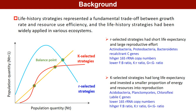As we know, life history strategy represents a fundamental trade-off between growth rate and resource use efficiency, and has been widely applied across various ecosystems. Generally, r-strategists have short life expectancy and large reproductive efforts. However, K-strategists have long life expectancy and devote a smaller proportion of energy and resources into reproduction.